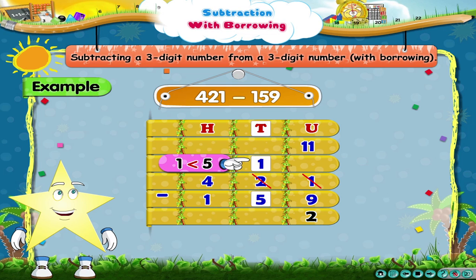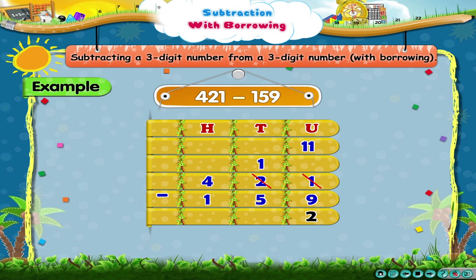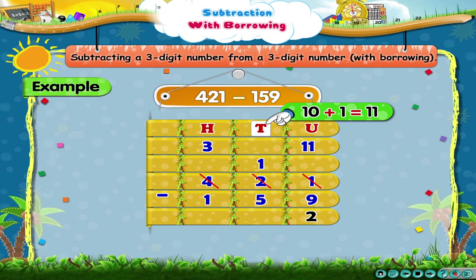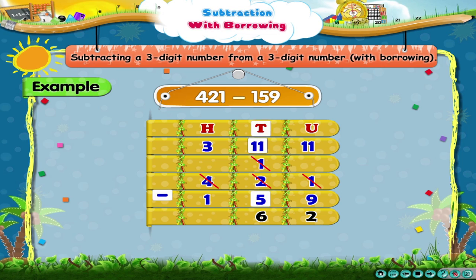Observe that the 1 tens is less than 5 tens. So, we need to borrow again, this time from the hundreds place. So, the hundreds place is reduced by 1 to become 3. The tens place is now increased by 10 and becomes 11. 11 tens minus 5 tens equals 6 tens.